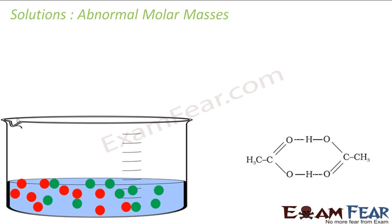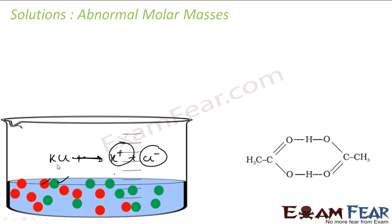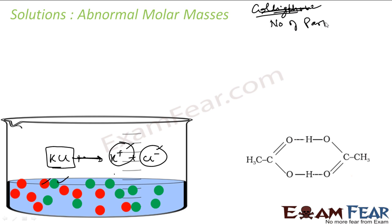Before we explain what that is, let's see this equation. An ionic compound generally dissolves in water and dissociates into cations and anions. For example, KCl put in water becomes K+ ions and Cl- ions. That means if I put one particle of KCl, it actually becomes two particles. All the colligative properties — increase in vapor pressure, decrease in melting point, boiling point, osmotic pressure — these depend only on the number of particles. That is why they are called colligative properties.